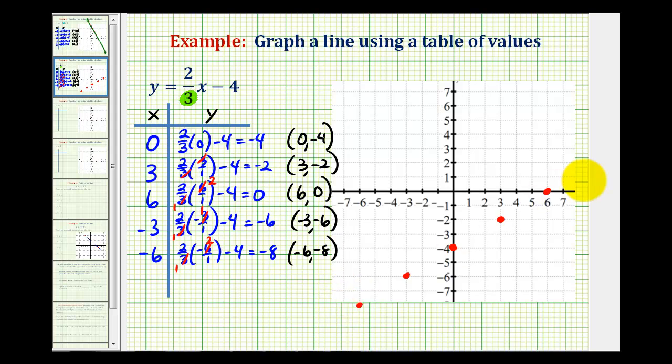And notice how these 5 points do form a single line, which does verify that our work was correct. So, the line y equals 2/3x minus 4 would be this line here.